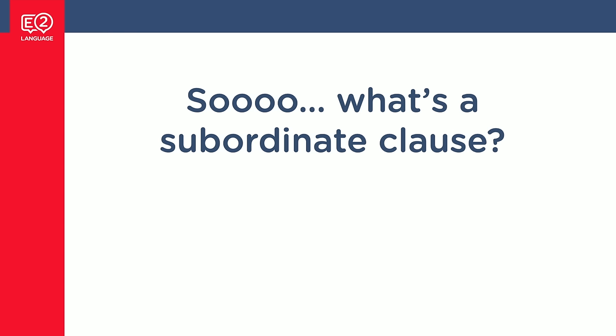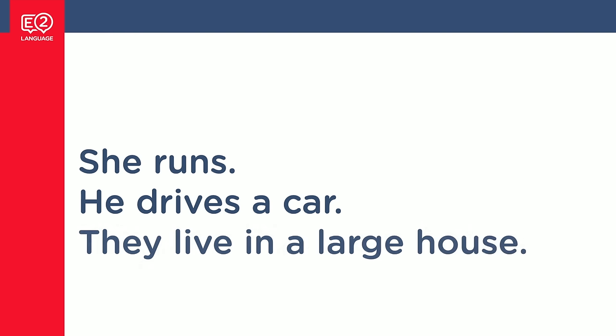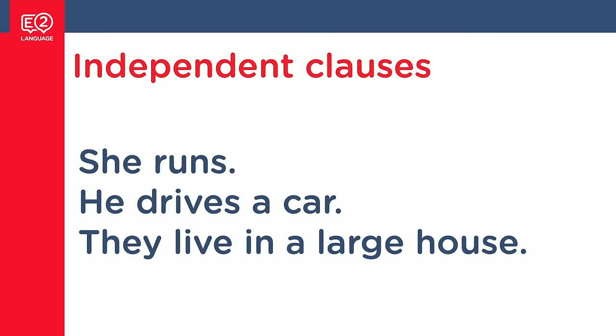So what is a subordinate clause? Well, let's deal first with: what is a clause? Basically, a clause is a chunk of language, and this chunk of language has a subject and a verb — at least a subject and a verb, like this: 'She runs.' 'He drives a car.' 'They live in a large house.' All of these chunks of language have a subject and a verb, and sometimes a little bit of extra stuff as well. These are all full sentences, complete thoughts — these are called independent clauses. They don't need anything else to make sense.